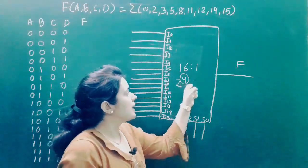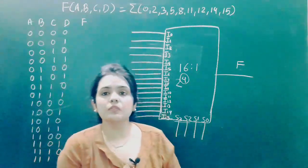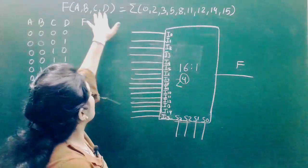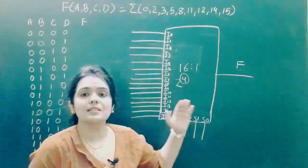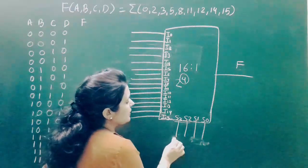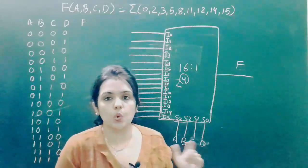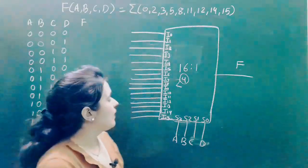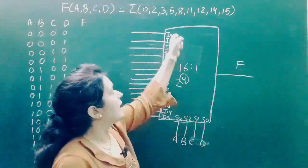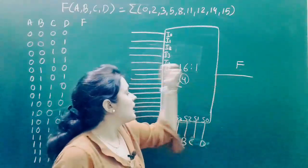There are 4 selection lines and 4 variables in our Boolean function, so we connect all 4 variables — A, B, C, and D — as selection lines. When the value of A, B, C, D is 0, 0, 0, 0, input I0 will be selected for output.